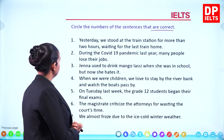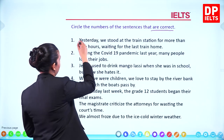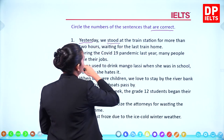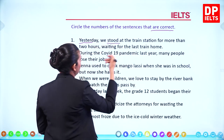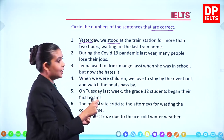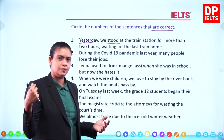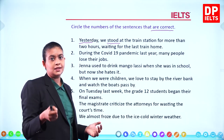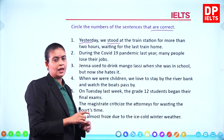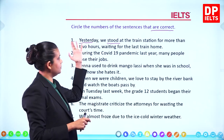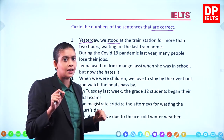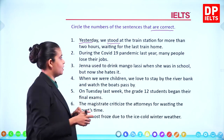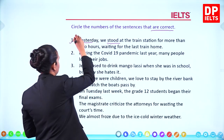Sentence one: 'Yesterday we stood at the train station for more than two hours waiting for the last train home.' Stand — stood — past tense. It is an irregular verb. The time frame 'yesterday' is given — a specific time in the past — so we use the simple past tense. Sentence one is correct.